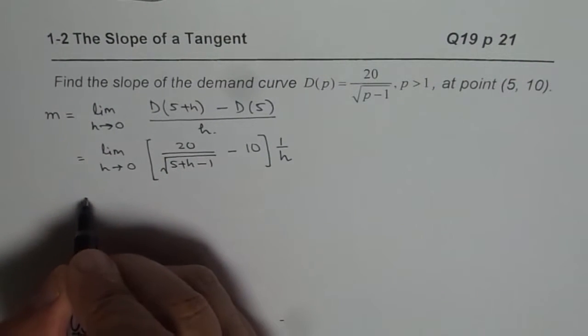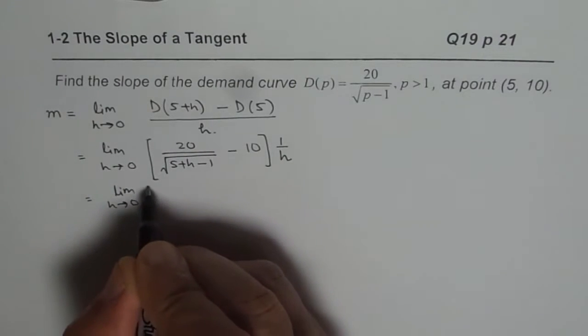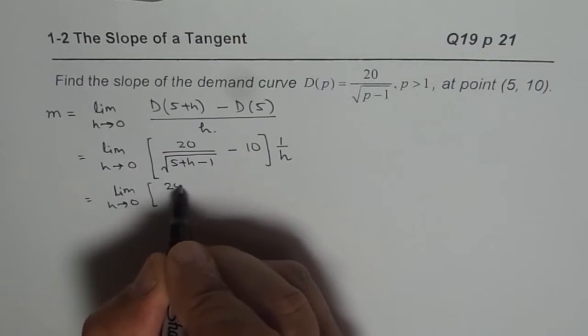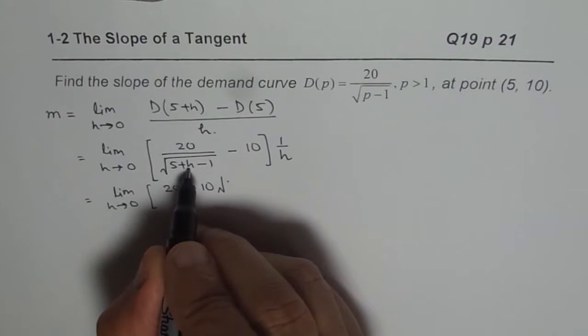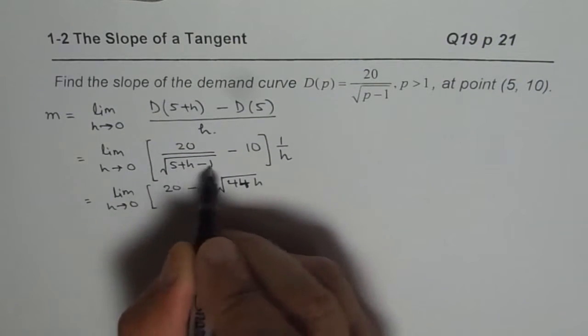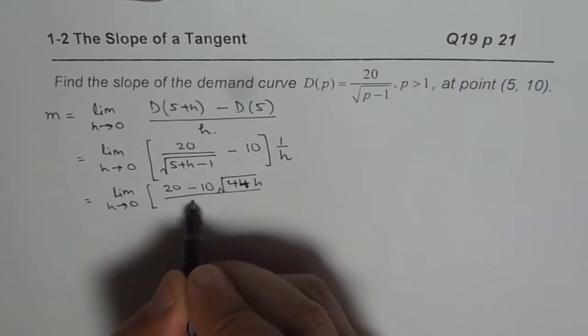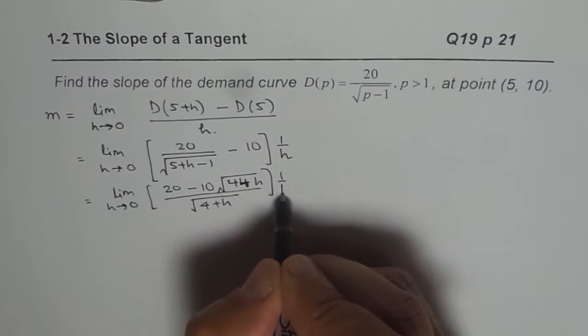Now, we will cross multiply and we get limit H approaches 0. 20 minus 10 times square root of 5 plus H minus 1, which could be written as 4 plus H. 5 minus 1 is 4, so we will write this as square root of 4 plus H times 1 over H.